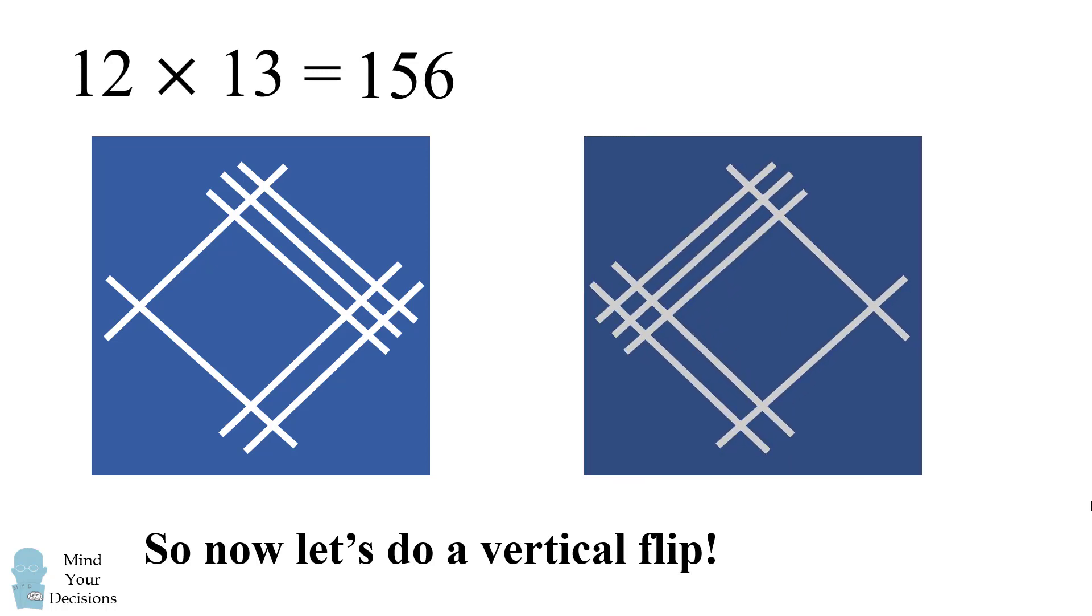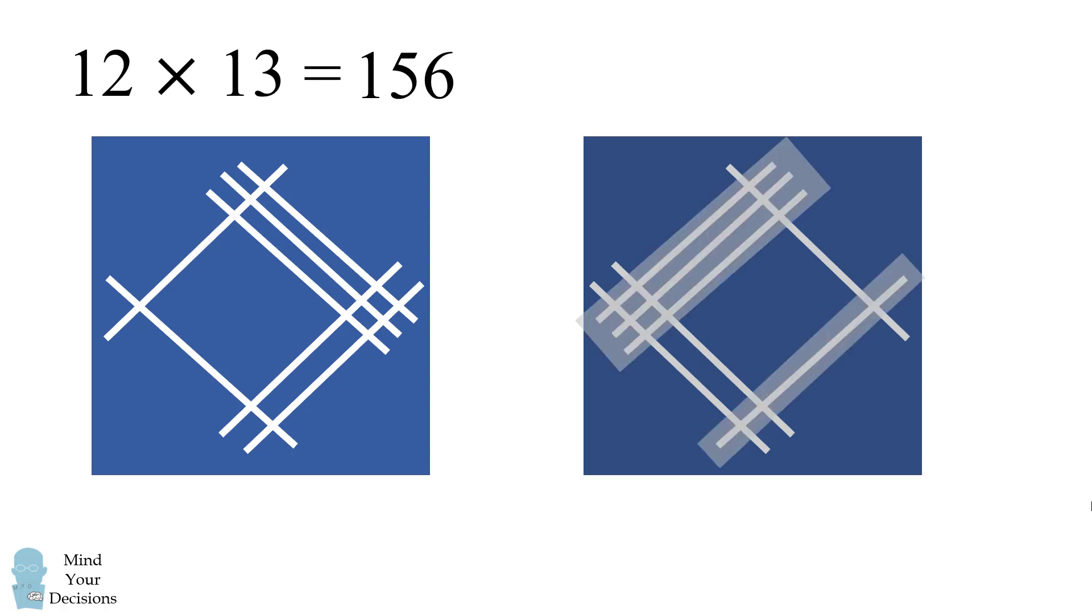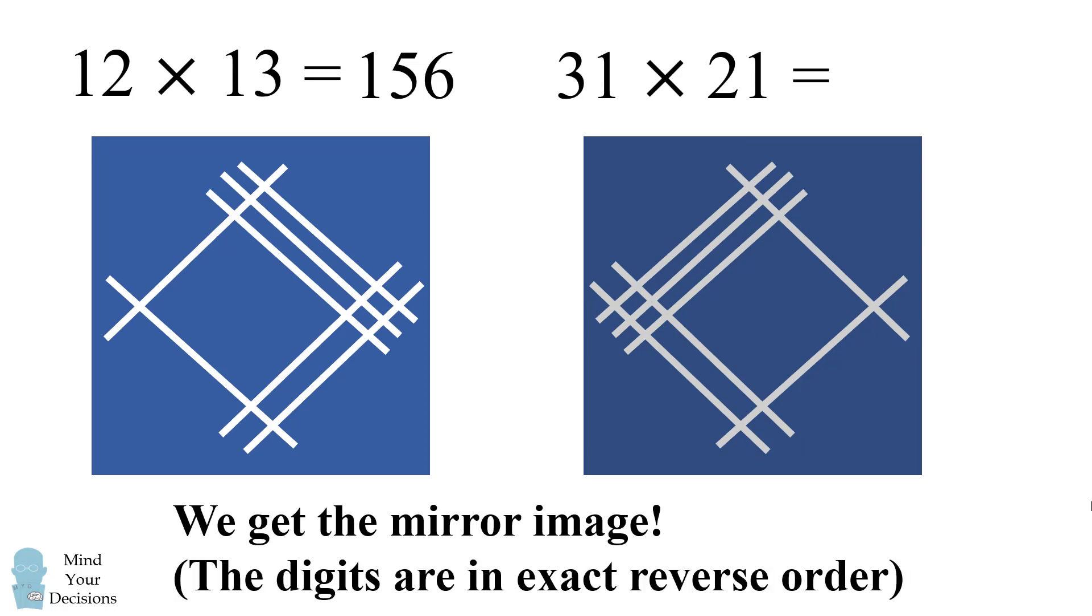We now have another mathematical problem. Here we have three lines followed by 1 which is 31. Here we have two lines followed by 1 which is 21. So we have 31 times 21. You'll notice these digits are exactly the mirror image of the original problem. The digits are in exact reverse order of 12 times 13. And in fact the answer will also be a mirror image. Instead of 156 we get 651.